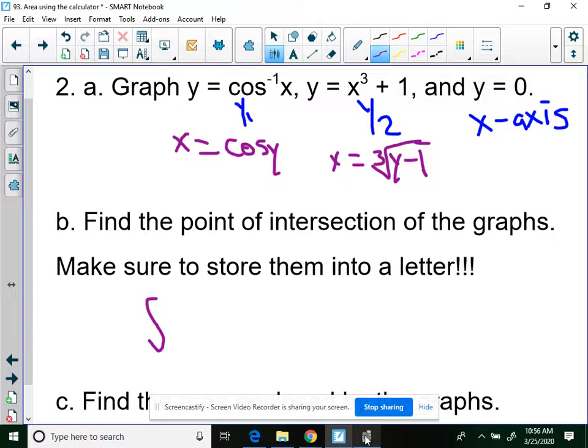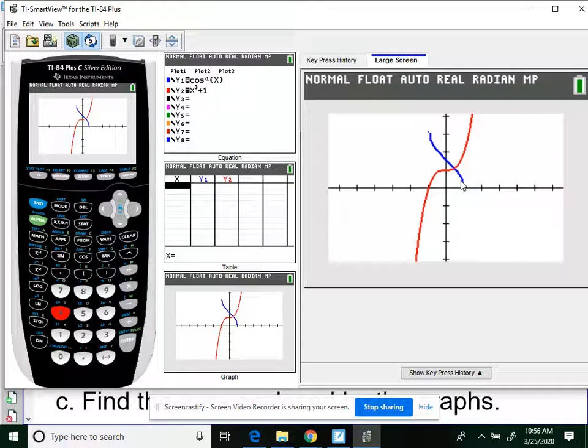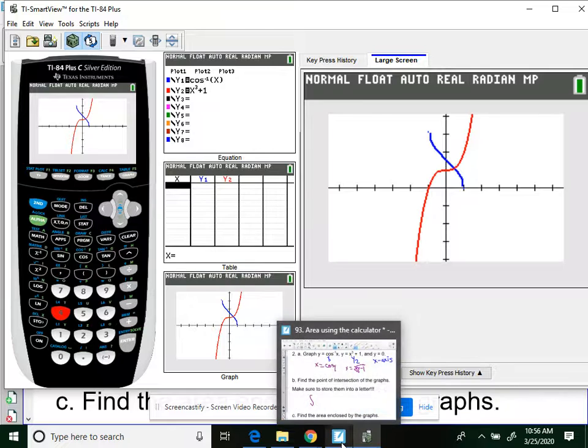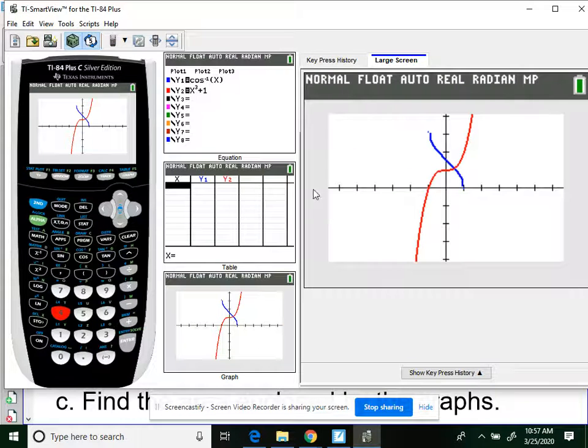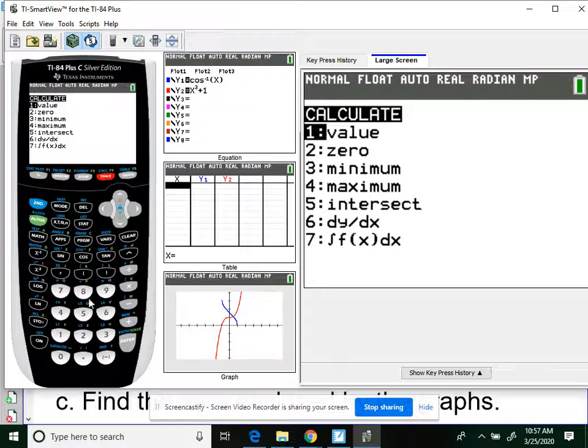So instead, all I need is the y values. 0 to whatever this highest point is. But then we also have to solve for y. So if we did this in terms of x, x equals cosine of y. And this one, x equals the cubed root of y minus 1. Now, by doing it this way, we have to actually type our function in, but it'll make it so we only need to do one intersection.